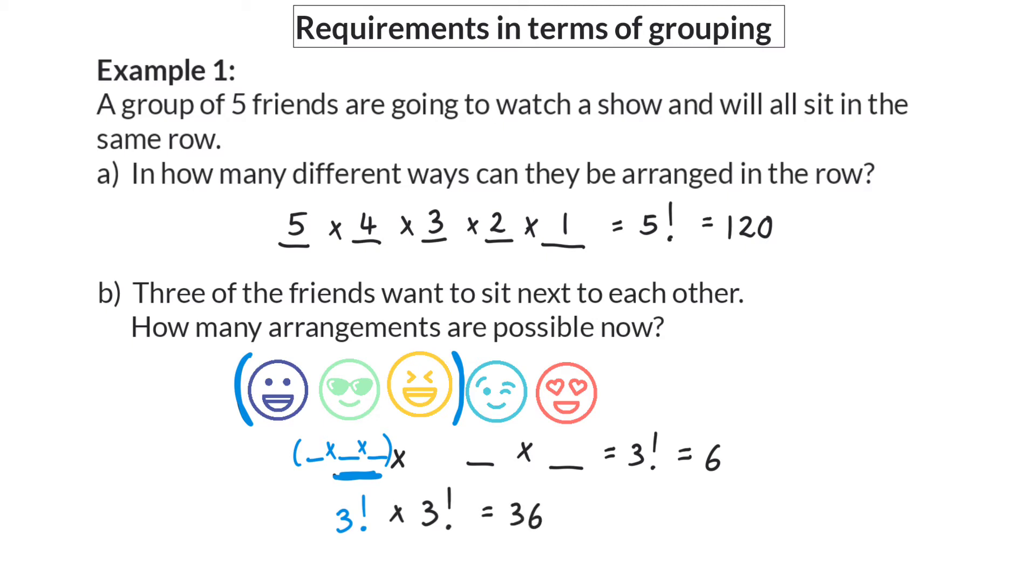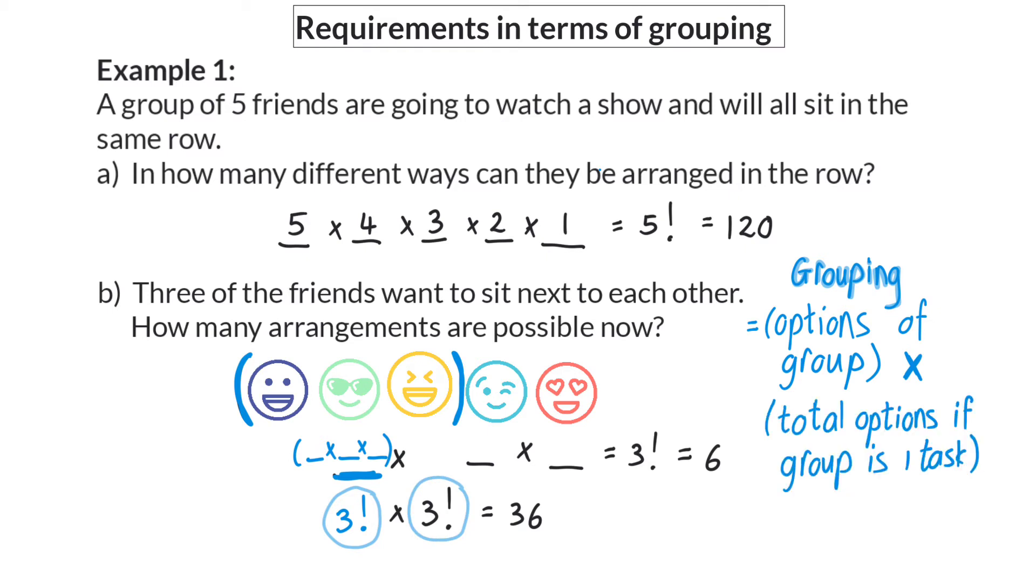This means that when there's a requirement added about grouping you will always take the possibilities or options of that specific group and multiply it with the total number of options if that group is seen as one task.